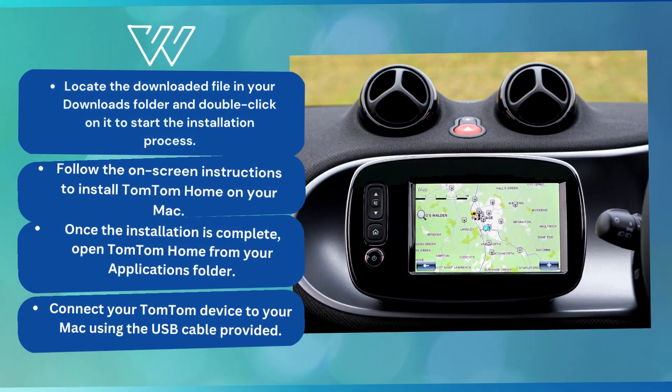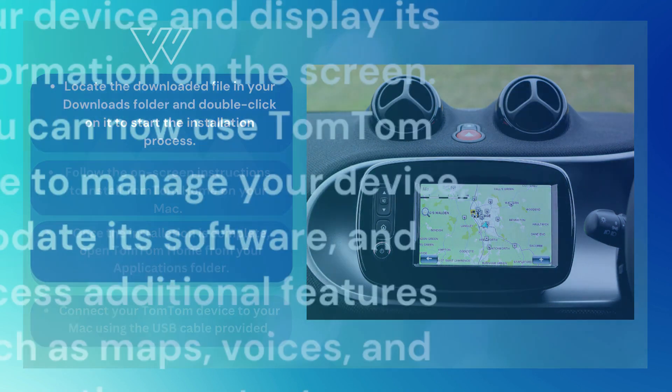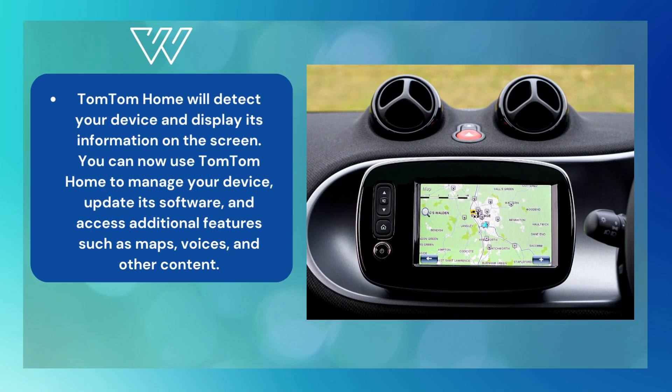Locate the downloaded file in your Downloads folder and double-click on it to start the installation process. Follow the on-screen instructions to install TomTom Home on your Mac. Once the installation is complete, open TomTom Home from your Applications folder. Connect your TomTom device to your Mac using the USB cable provided. TomTom Home will detect your device and display its information on the screen.